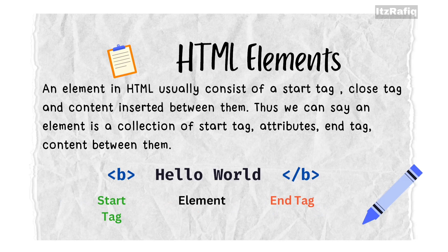An HTML element is everything we write from the opening tag to the end tag together. An element is a collection of: the start tag, attributes inside the start tag, content, and the end tag — four things. This is known as an element.